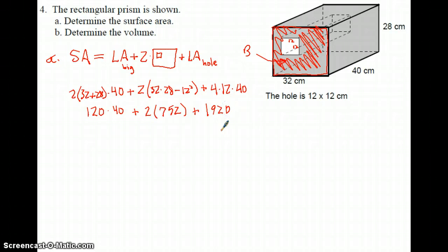Perimeter of the whole thing is 32 plus 28 plus 32 plus 28 times the height of that, which is 40. Now we just have one huge calculation. Here I get 120 times 40 plus 2 times 32 times 28 minus 144, I get 752. Plus 4 times 12 times 40 is 1920. Alright, 120 times 40 is 4800 plus 2 times 752 is 1504, plus 1920. I get 7184 and I add those two up and I get 11,984.